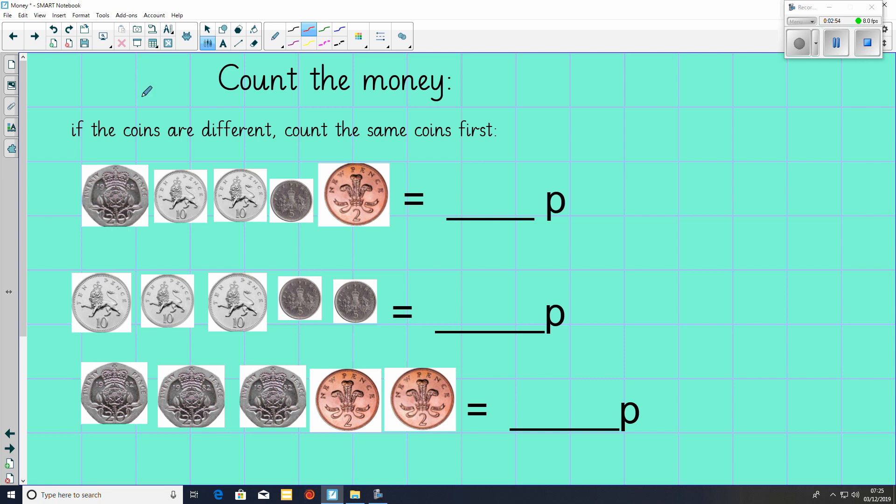Pause the video here and have a go at counting the money where the coins are different. You should have 47 pence, 40 pence, and 64 pence.